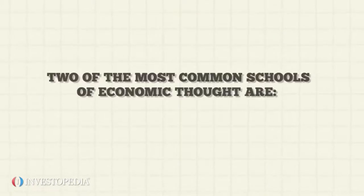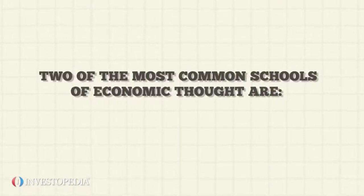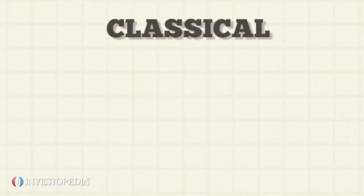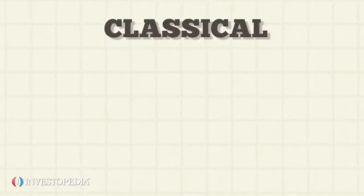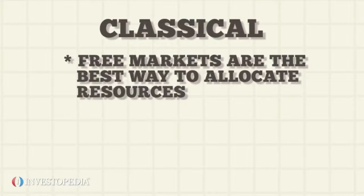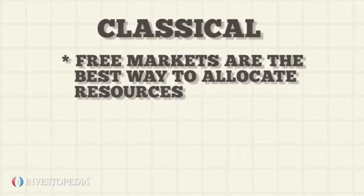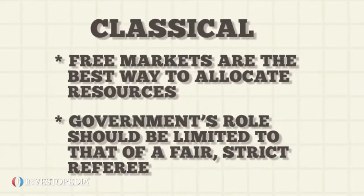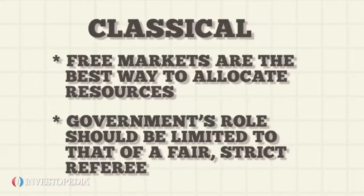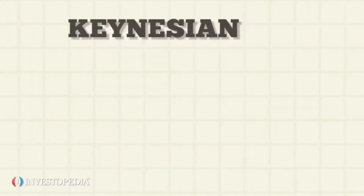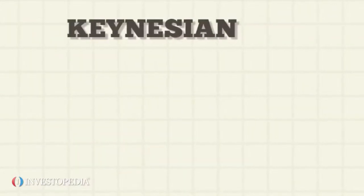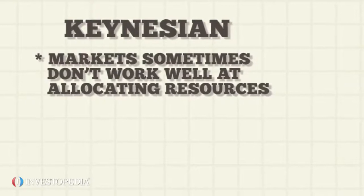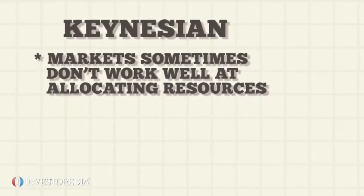Two of the most common schools of economic thought are called classical and Keynesian. The classical view believes that free markets are the best way to allocate resources and the government's role should be limited to that of a fair, strict referee. However, the Keynesian approach believes that markets sometimes don't work well at allocating resources.